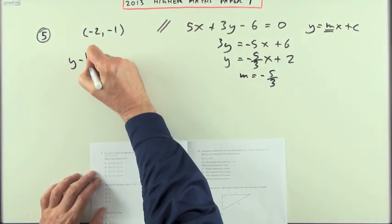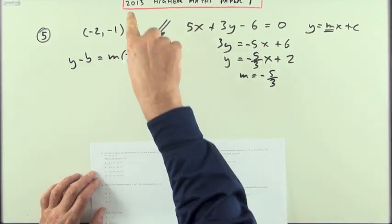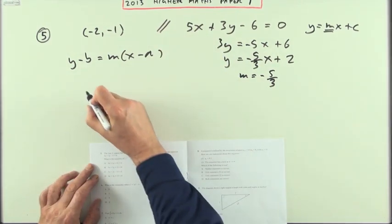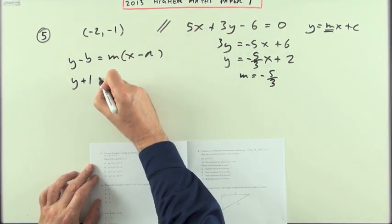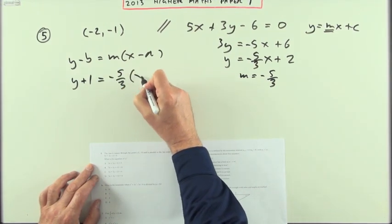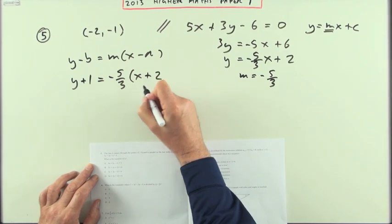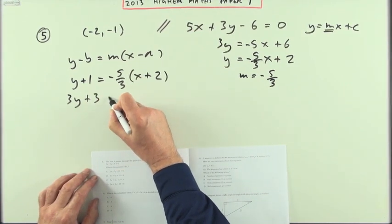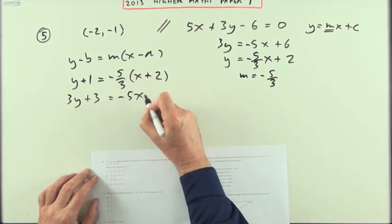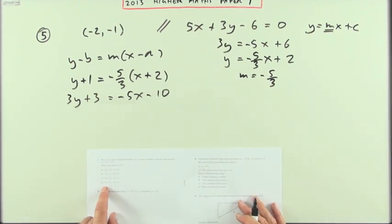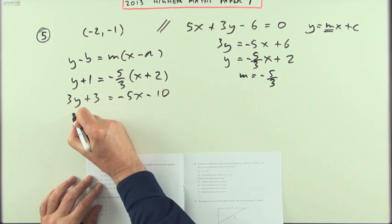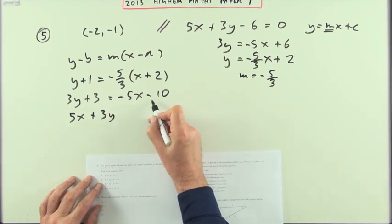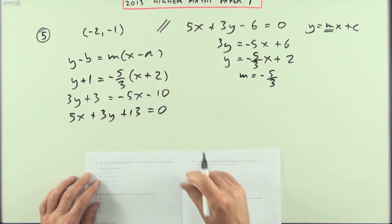Popping it into y minus b equals m times x minus a, using this point. It passes through this point with gradient negative 5 upon 3 — the same gradient because it's parallel. So y minus the y-coordinate equals negative 5 upon 3 times x minus the x-coordinate. Multiply both sides by 3, leaving negative 5 to multiply the right side. Bring the 5x over as a positive 5x, giving 5x plus 3y, and bring the negative 10 over as plus 10, plus 13 equals 0.